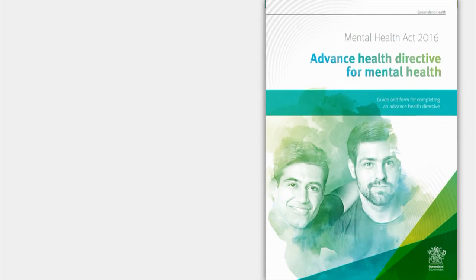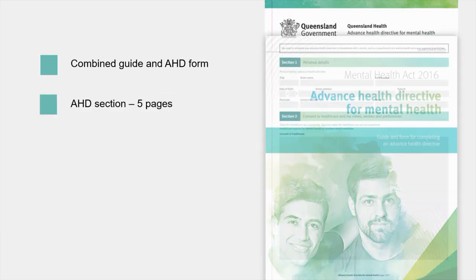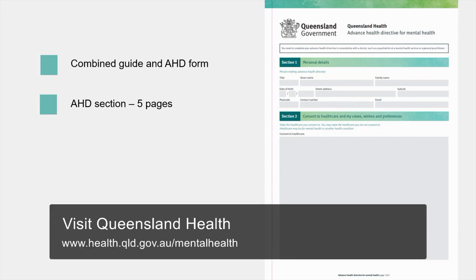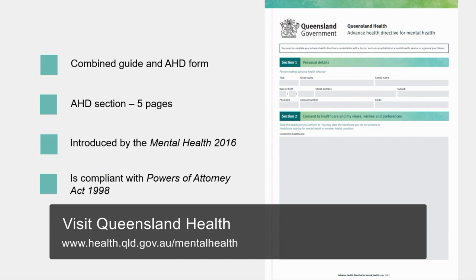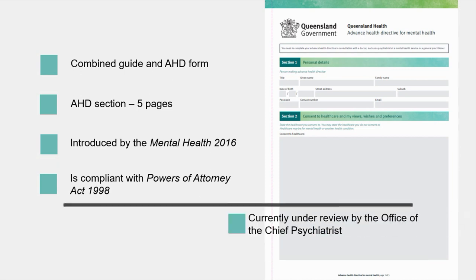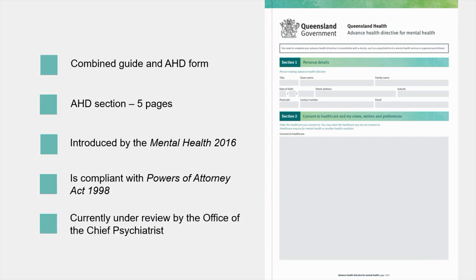This brings me to the advanced health directive for mental health. This document, currently displayed on your screen, is a combined guide and form used by a person wishing to make an AHD that documents their decisions surrounding their mental health treatment. The AHD itself is only five pages long and may be presented to you for witnessing without the guide — this is perfectly acceptable. You can witness this AHD for mental health even though it's not in the approved Form 4; just follow the same witnessing practice as you would for that form. With changes to legislation, this form is currently under review and Queensland Health has prepared a fact sheet to assist anyone wishing to use this guide and form.